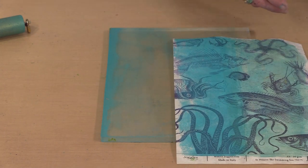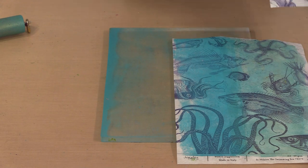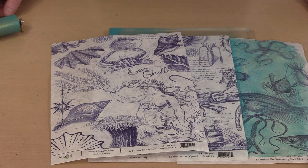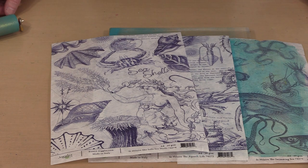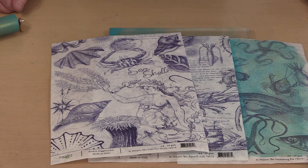So these are Elizabeth's three brand new rice papers: the Swimming Sea, the Aquatic Life, and She Sells Seashells. We have these sets and Elizabeth's original two releases, U.S. Mail and Bees and Bugs, available now at joggles.com.